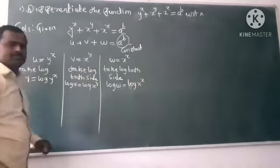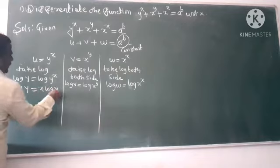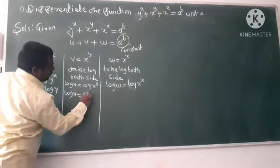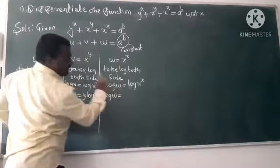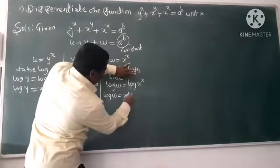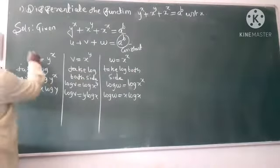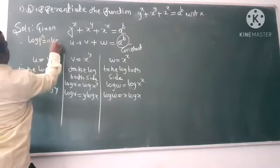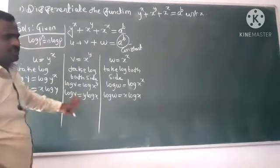Applying the log power rule — log(p^m) = m·log(p) — we get: log u = x·log y, log v = y·log x, and log w = x·log x. This is how we express each term using the log formula.